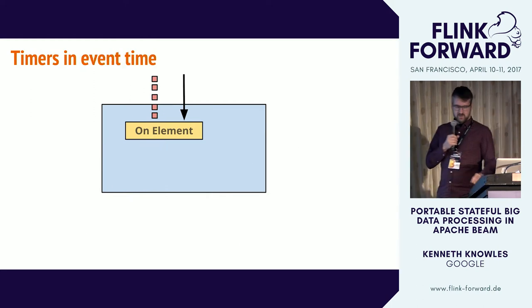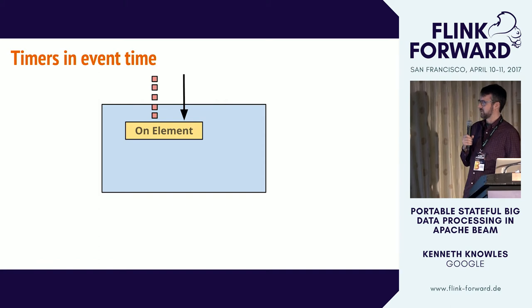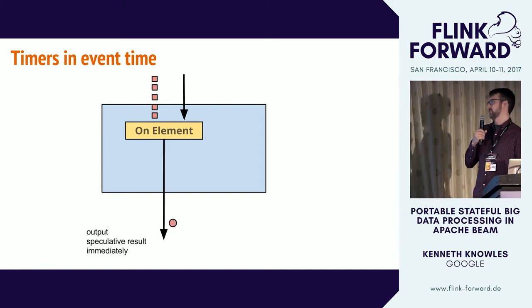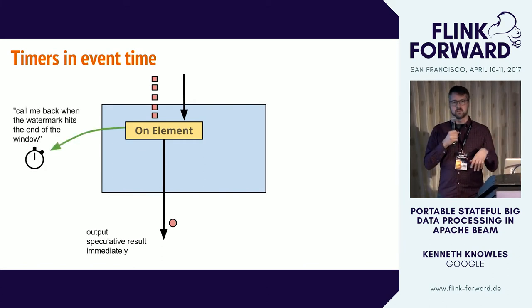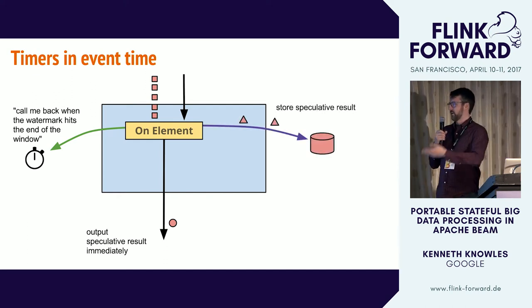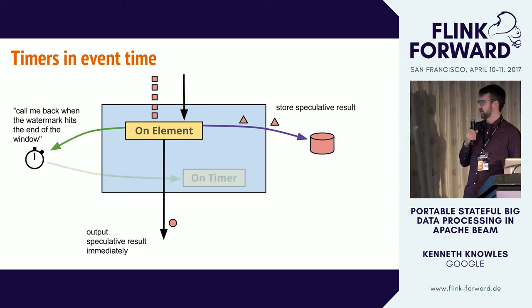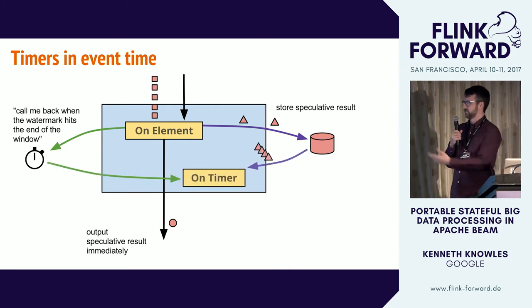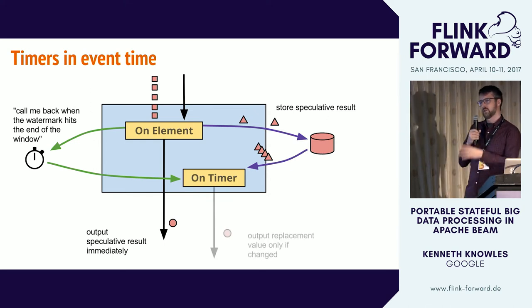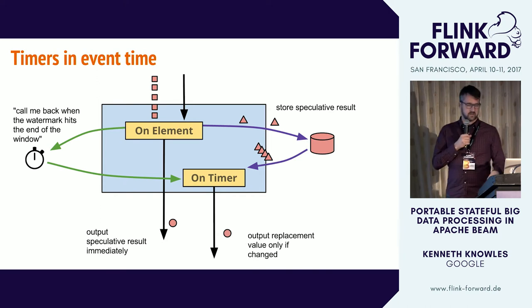The other kind of timer — fundamentally different — is an event time timer. These fire when the watermark passes a certain point, like the end of a window. They're really a measure of completeness — how much of your data does the system think you've got. Elements come in, you immediately output something about the incoming event, and set a timer to call back when the watermark hits the end of the window for special finalization work. Perhaps you output a speculative result, and later when the timer fires, you pull back all speculative results and output one final correction if needed, saving bandwidth downstream.